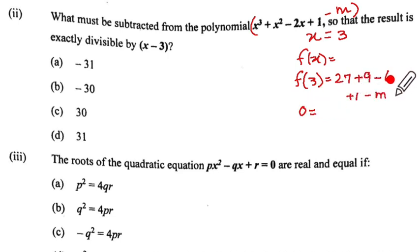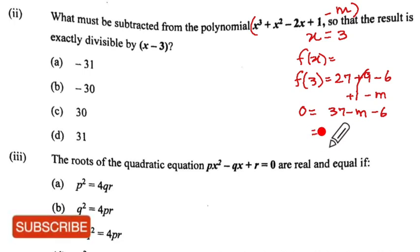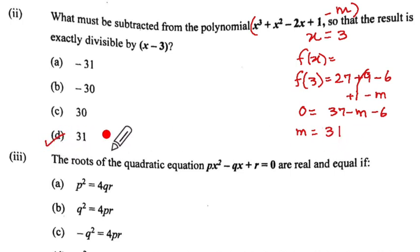If it is exactly divisible, the remainder F(3) must be 0. So let's check what we get here. This is 9 and 1, that's 10, so we have 37 and minus 6. So 37 minus 6 minus M equals 0. That gives us M equal to 31, and the option is D.